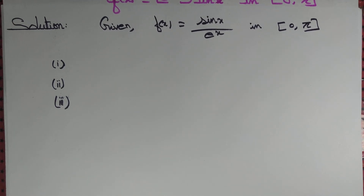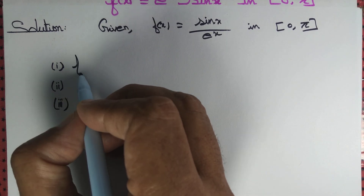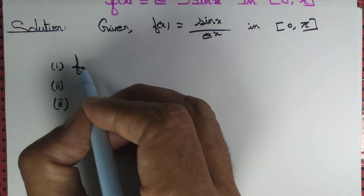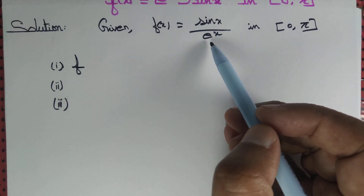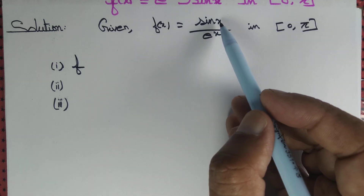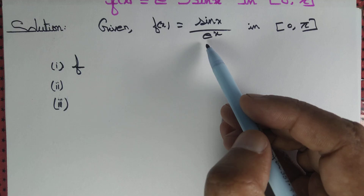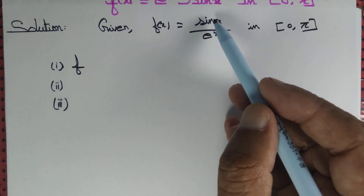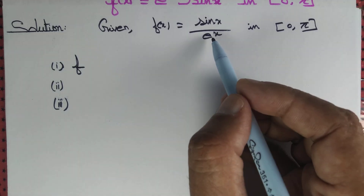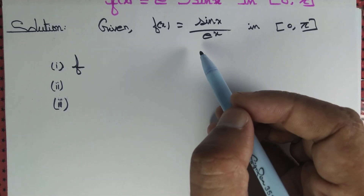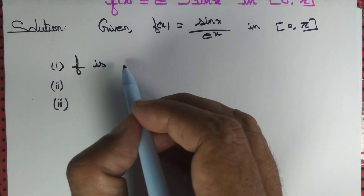First, f must be continuous. We observe that f is a quotient of sin(x) by e^x. We know that sin is continuous and the exponential function e^x is also continuous. A quotient of continuous functions is continuous, provided the denominator is not equal to 0, and e^x is never equal to 0. Therefore, f is continuous.